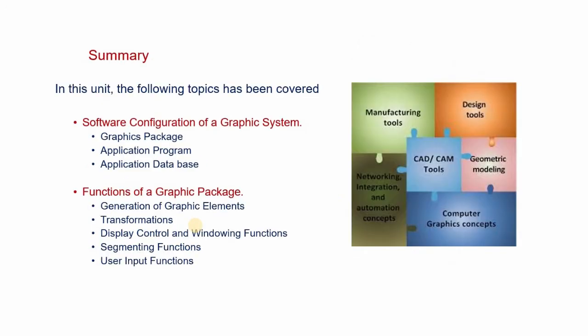In this topic, we have covered the software configuration of a graphic system, which includes the graphic package, application program, and application database, and the various functions of the graphic package such as generation of graphic elements, transformations, display control and windowing functions, segmenting functions, and user input functions.